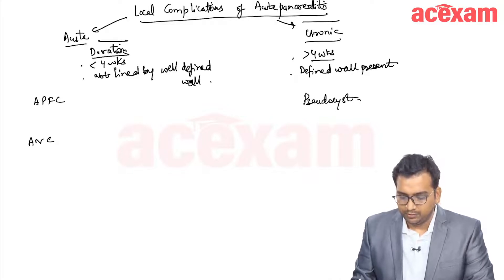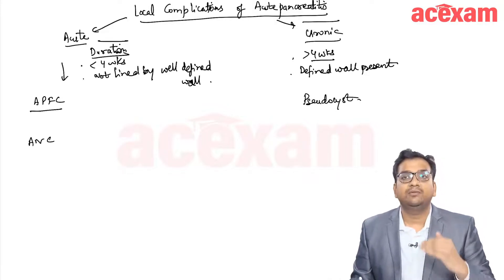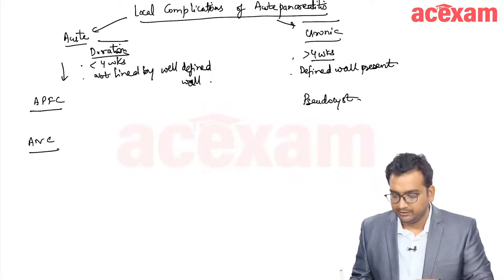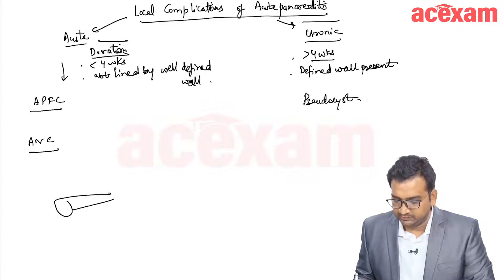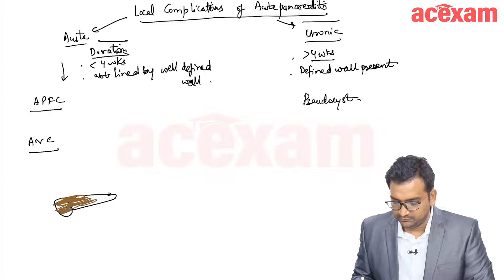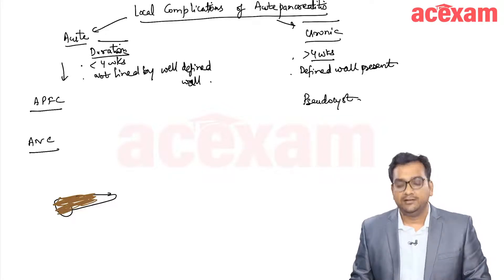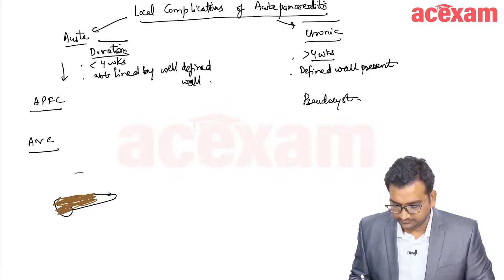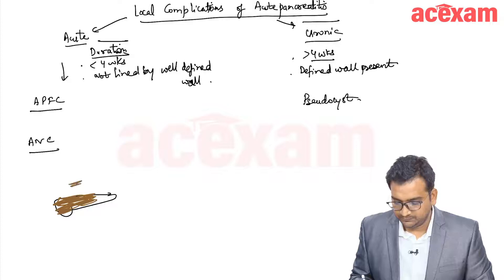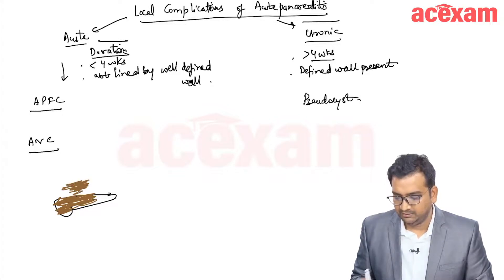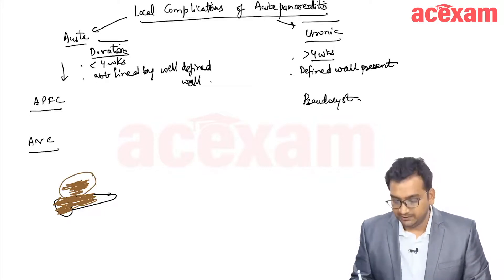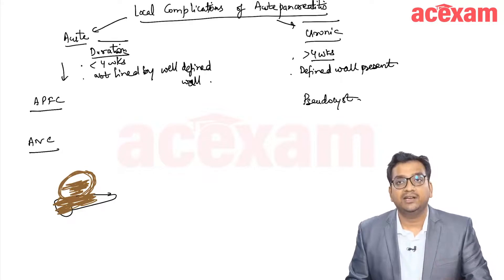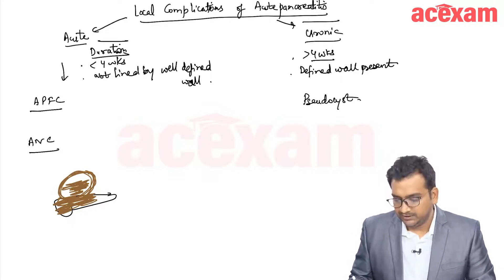The acute complications can be acute pancreatic fluid collection (APFC) or acute necrotic collection (ANC). If necrosis occurs in a portion of the pancreas and there is a collection containing necrotic material in the peripancreatic or pancreatic area, that is acute necrotic collection. If this becomes lined by a wall, the acute necrotic collection will become walled-off necrosis.